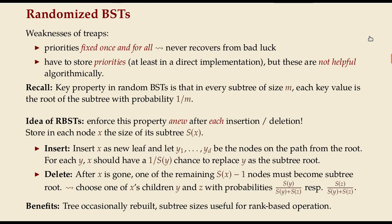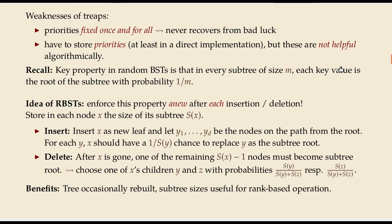The first one was treaps, where we assigned random priorities to each key when it was inserted and ordered the tree as a search tree according to the keys and as a heap with respect to the priorities. There are two points of criticism for treaps. In particular the second one is something we can do better: we have to store these priorities but they don't help us in any sense to do anything other than add any other cool operations on the trees.